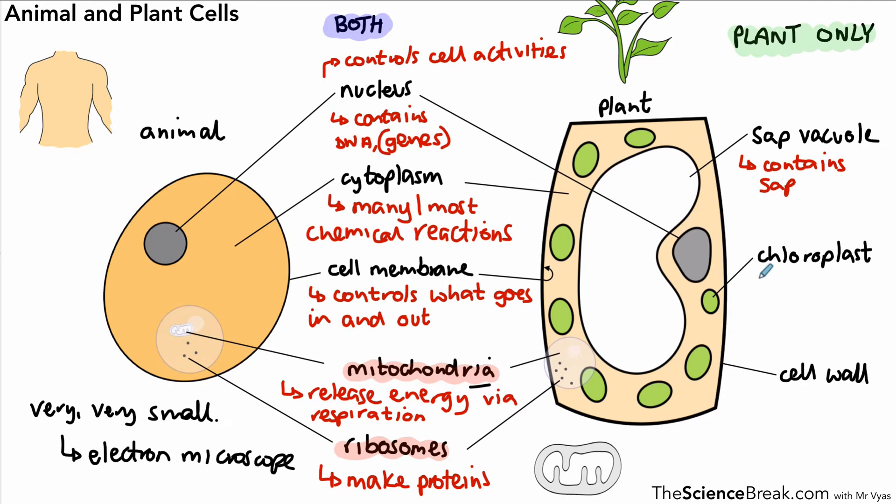Then we have the sap vacuole that contains sap, which is just basically a sugary solution. We have the chloroplast, which contains chlorophyll that absorbs light energy for photosynthesis. I always remember that chlorophyll fills the chloroplast. Its job is to absorb light so the plant can carry out photosynthesis.